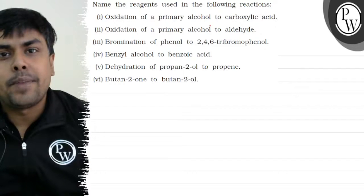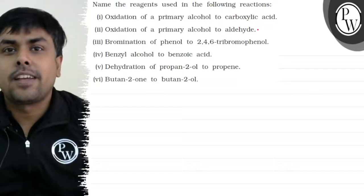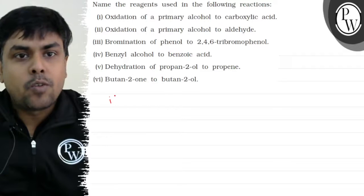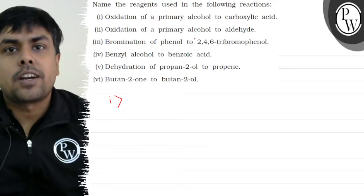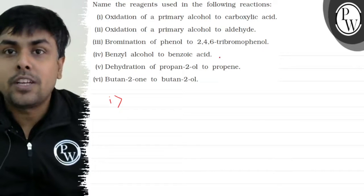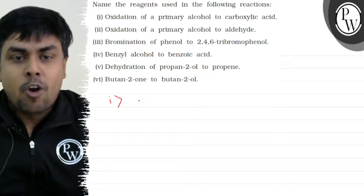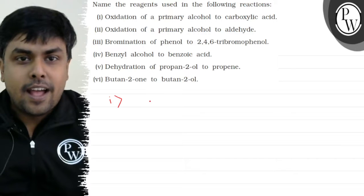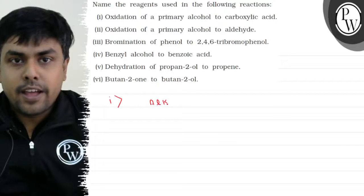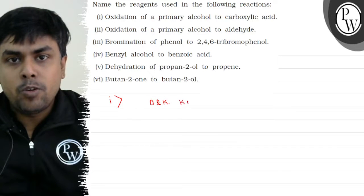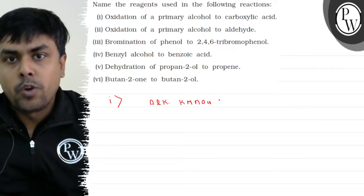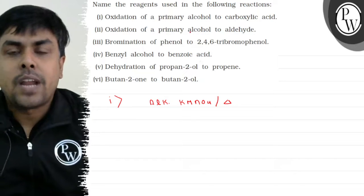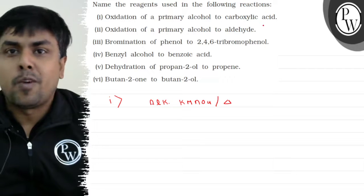Reaction number 1: Oxidation of primary alcohol to carboxylic acid. Children, when I have primary alcohol to convert into acid, we will use a strong oxidizing agent. And what can I have? I can have alkaline KMnO4 with heat. I will get primary alcohol to carboxylic acid.